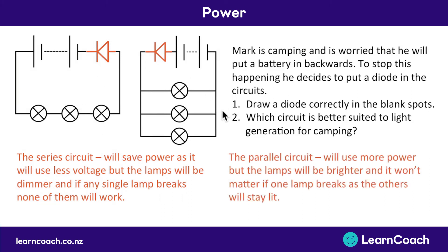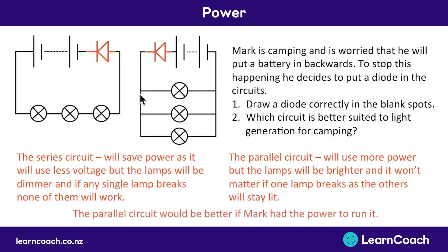On the other hand, a parallel circuit uses a lot more power because each bulb draws more from the battery. But because we're using more power, each bulb will be brighter. And if one bulb blows, you'll still have the other two lights going because current can travel down the alternate pathways. Overall, the smart choice would be a parallel circuit — as long as Mark has the power to run it — because it means he won't be stuck in the dark and will have bright lights. However, you could equally argue for series if he has limited batteries and only three lamps, since it wouldn't be too hard to find the blown one.